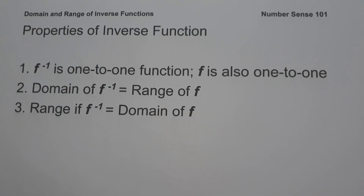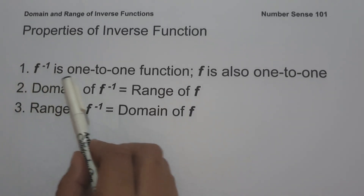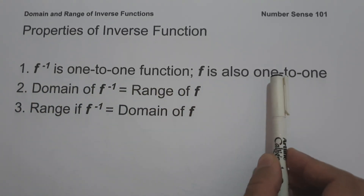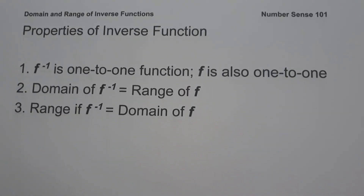In finding the domain and range of inverse functions, let us familiarize ourselves with the different properties of inverse functions. The first one: the inverse is a one-to-one function, and the function is also one-to-one, because a function has an inverse if and only if it is one-to-one.